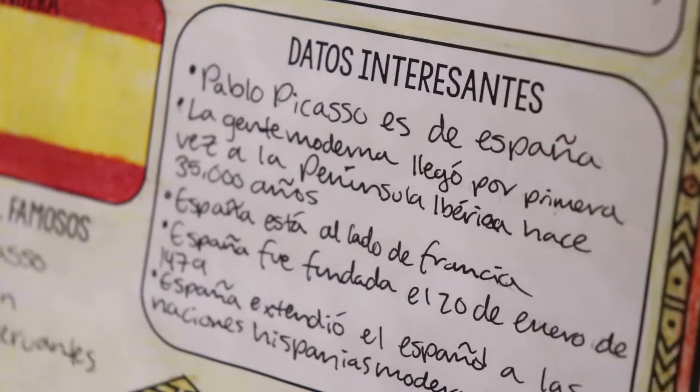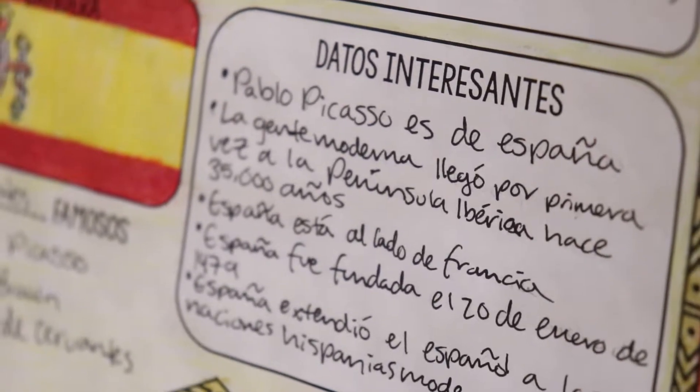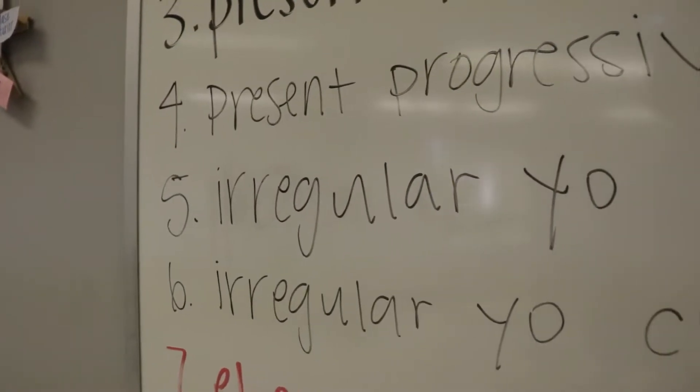I teach AP Spanish Language and Culture. AP Spanish is the fourth level of Spanish we offer here, after taking Spanish 1, 2, and 3 Honors. The difference between Spanish 3 and Spanish AP is that your child is still trying to get college credit — essentially more college credit from taking Spanish.